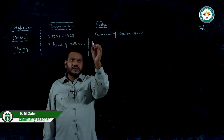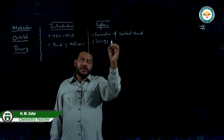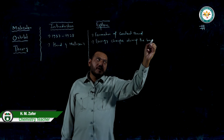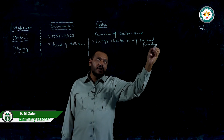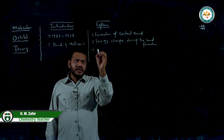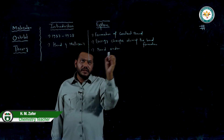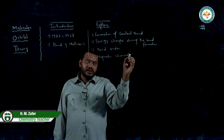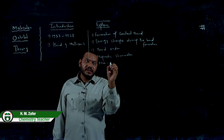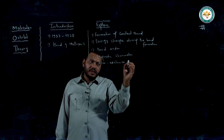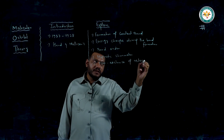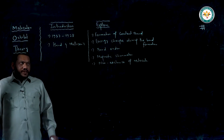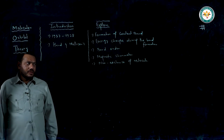This theory explains energy changes during bond formation. Next, this theory explains bond order. Next, this theory explains magnetic character. Also, this theory explains the non-existence of a molecule — whether a molecule will exist or will not exist. So in its importance, this is a very advanced and effective theory.